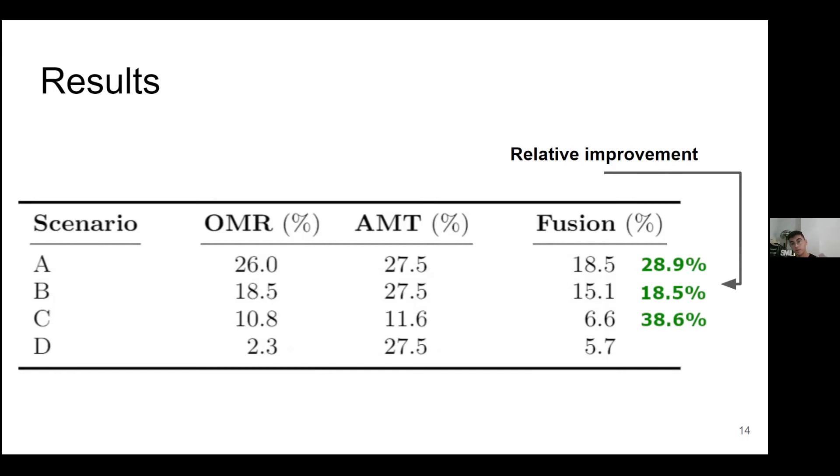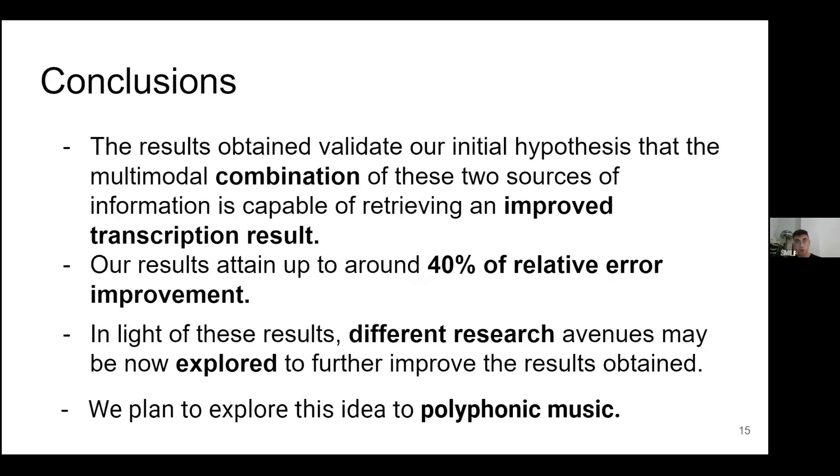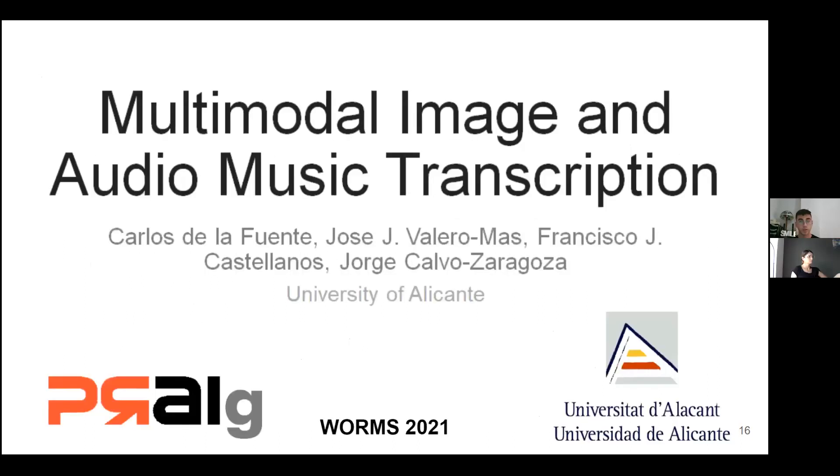The conclusions that we can obtain - the results obtained validate our initial hypothesis that the multimodal combination of OMR and AMT improves transcription results. Our results attain up to around 40% of relative error improvement. And as future work, in light of the results, different research avenues may now be explored, and we plan to explore this idea for polyphonic music. That is all, and thank you very much.